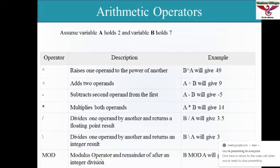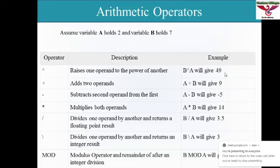The last arithmetic operator is modulus. The power-of operator is used to give a power to a value. Assume variable A has value 2 and variable B has value 7, so 7 to the power of 2 gives a value of 49.